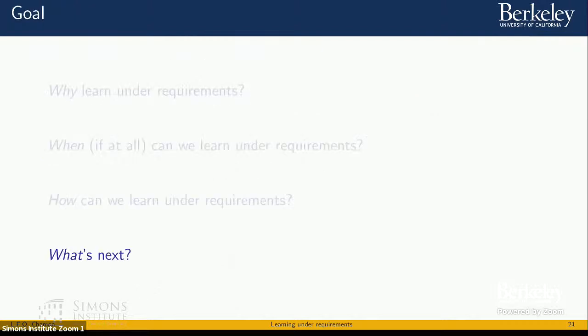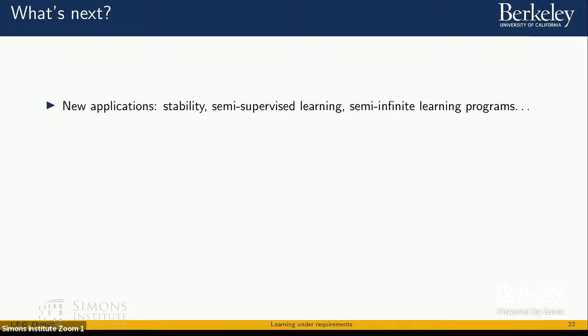In terms of what's next, there are a lot of challenges still in this problem. There are three things that I'd be interested in looking into. The first one is with respect to applications, especially non-conventional ones like stability, semi-supervised learning, also semi-infinite learning programs, which we have been using for that adversarial problem and also to learn functions with smoothness properties that has very interesting connections with sampling as well.